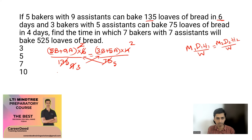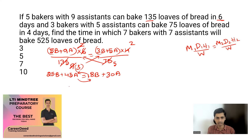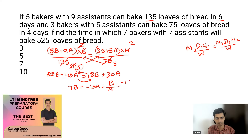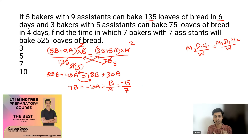Cross-multiplying gives: 5×5=25B + 45A equals 3×3=9×2=18B + 5×15×2=30A. Taking B to one side and A to another: 7B equals −15A, so B/A equals −15/7. This means assistants have positive efficiency and bakers have negative efficiency — assistants effectively cancel out some of the bakers' contribution. That is the actual meaning of this ratio.